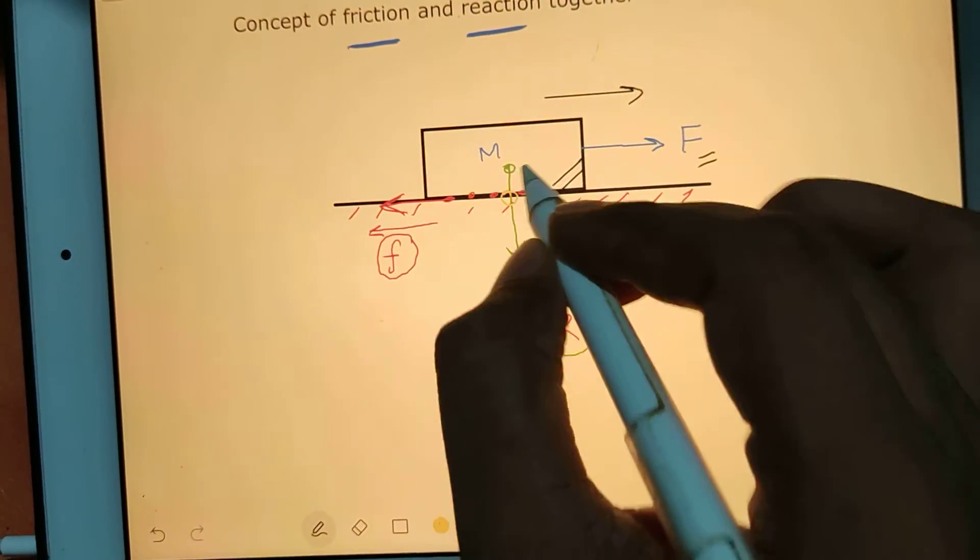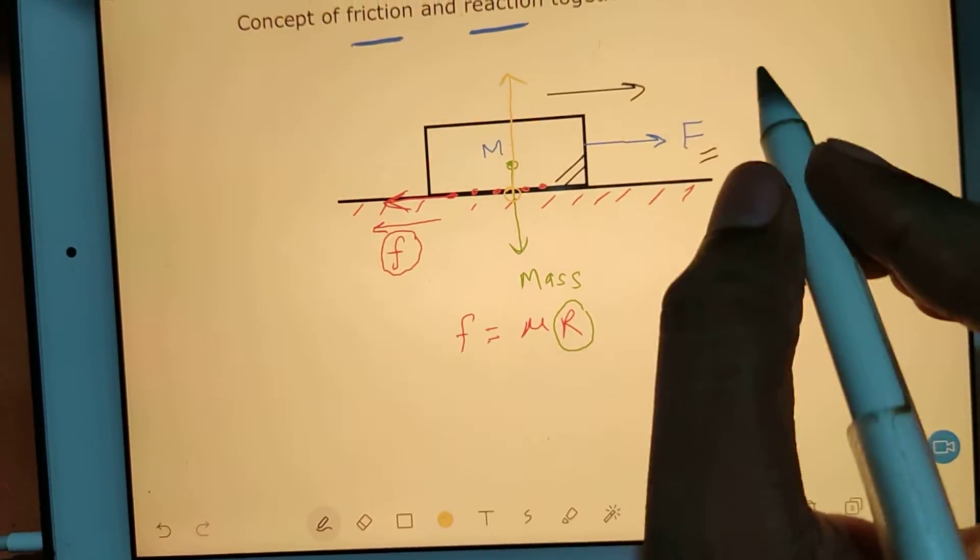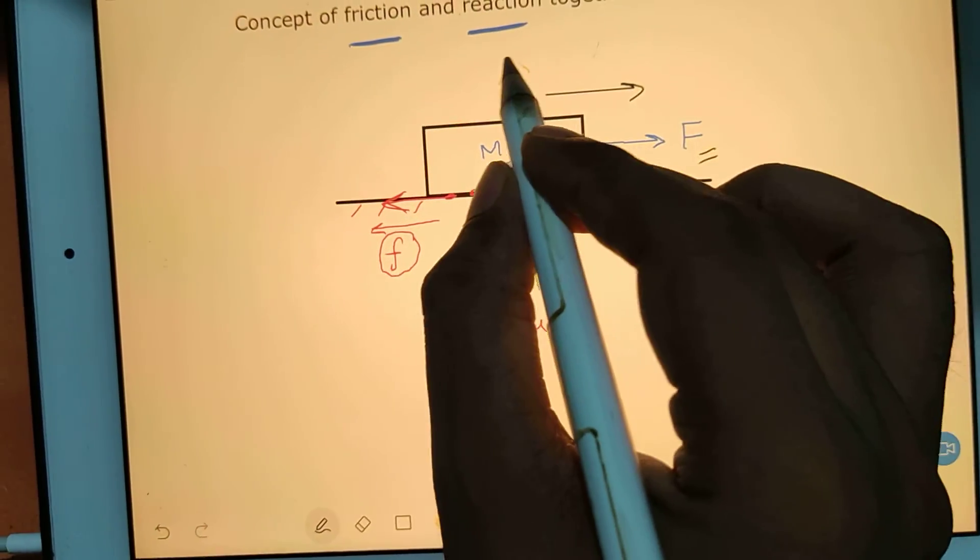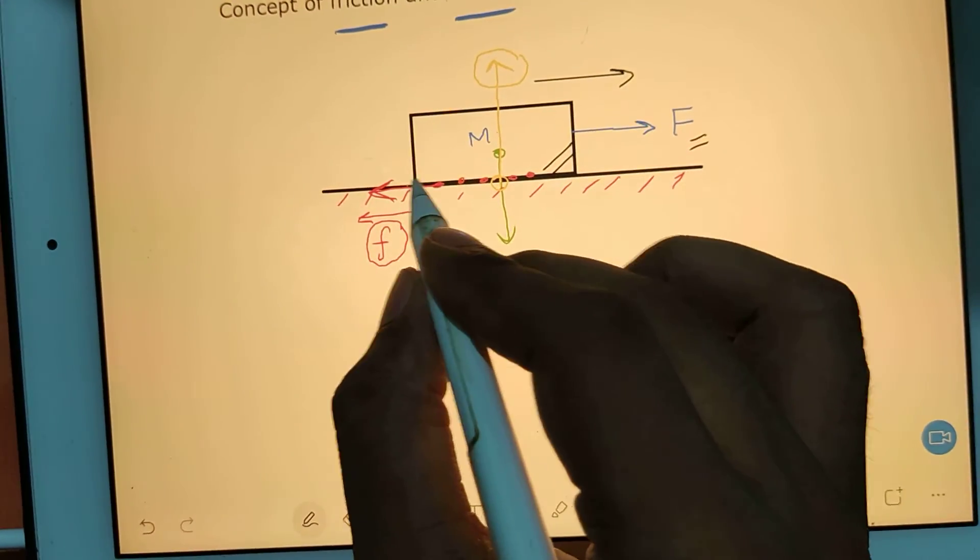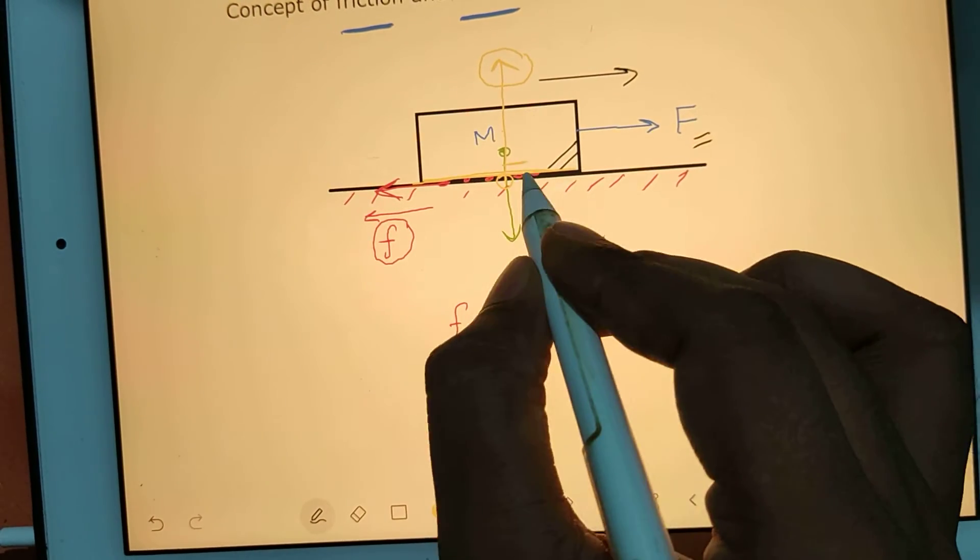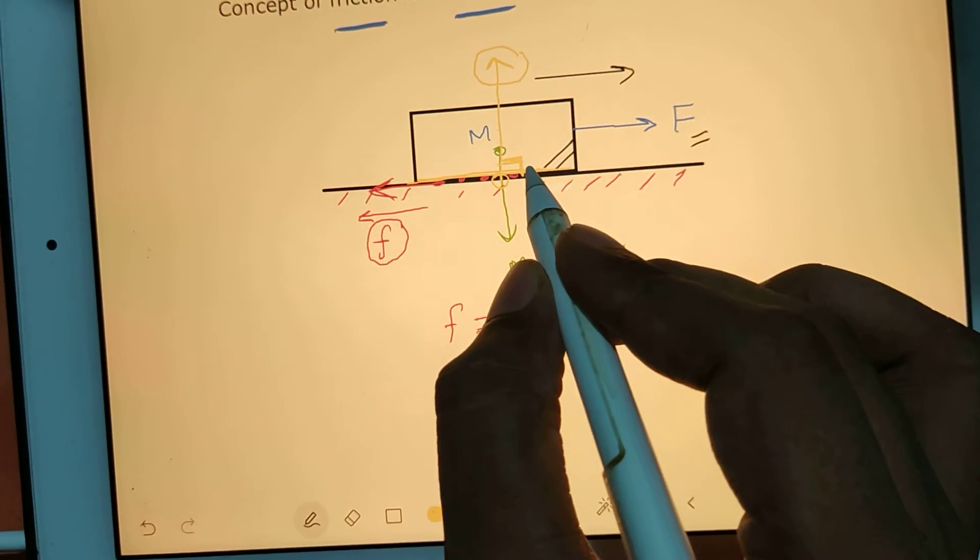Perpendicular, so you can see it is perpendicular to the surface, right? Now because of that, we say that our R value is...